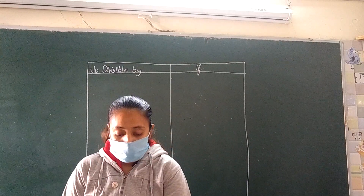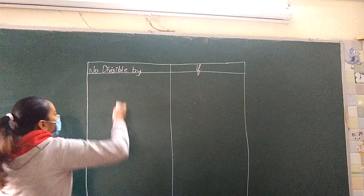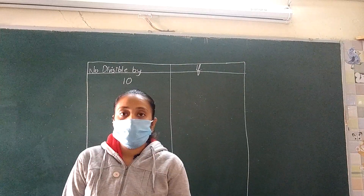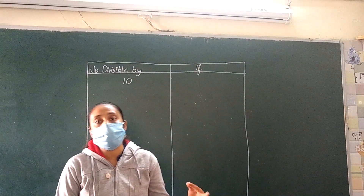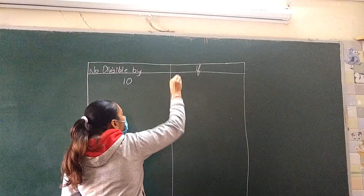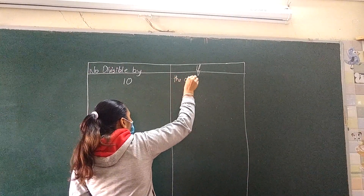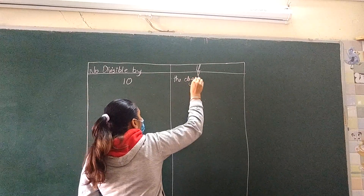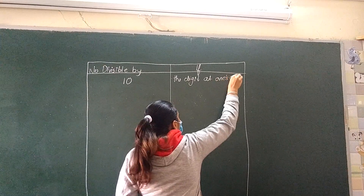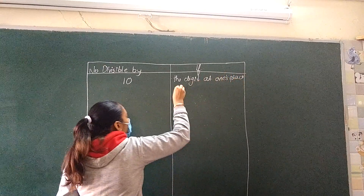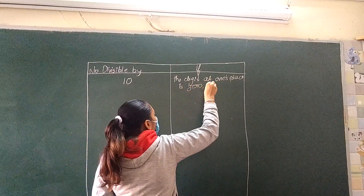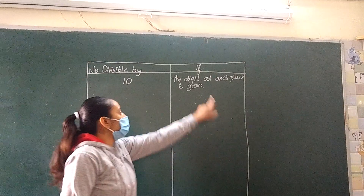Now, test of divisibility by 10. If the digit at the 1's place is 0, the number is divisible by 10.